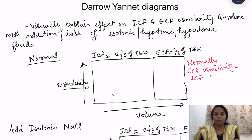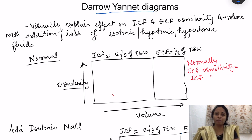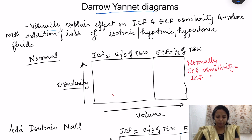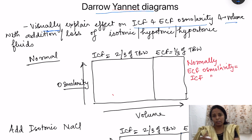Let us see what would be the effect on ICF and ECF osmolarity if a fluid of varying osmolarity is added into the body fluids. This is understood by means of Darrow-Yanet diagrams, which represent the osmolarity and volume of ECF and ICF in graph format, and show the changes when any fluid is added. Darrow-Yanet diagrams visually explain the effect on ICF and ECF osmolarity and volume with addition or loss of isotonic, hypertonic, or hypotonic fluids.